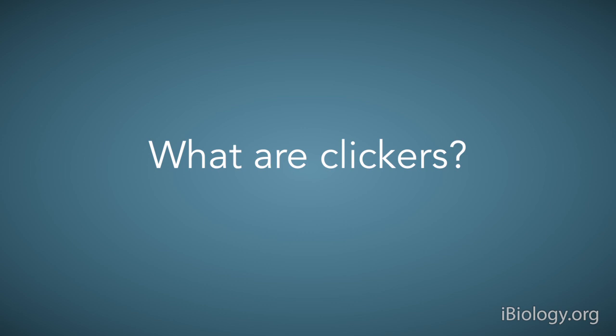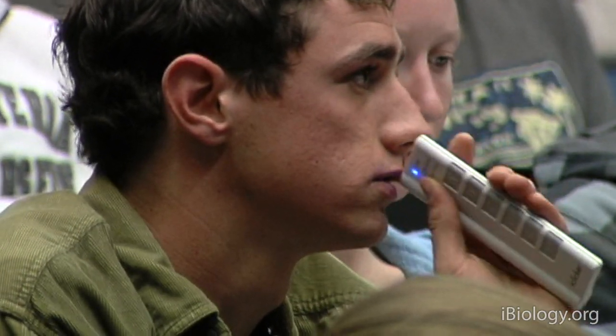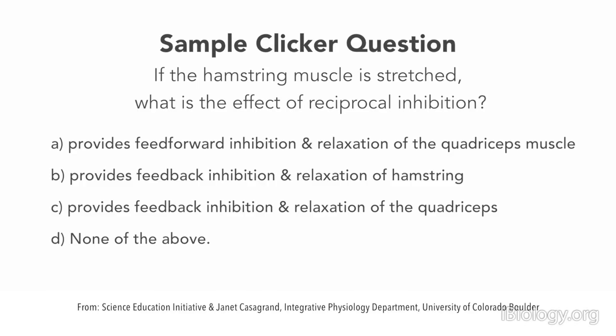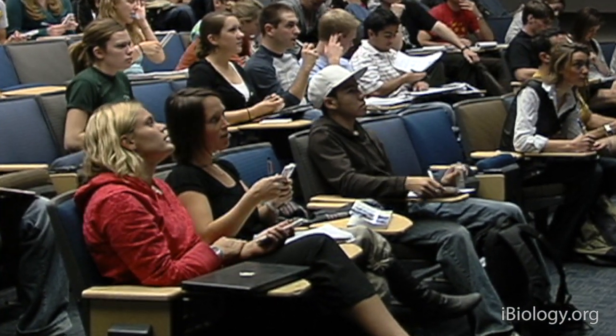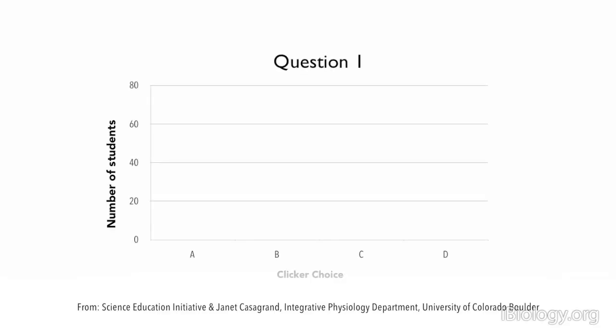So what are clickers? The technical term is an audience response device. It's a little handheld device like a TV remote, and generally they have five buttons on them — A, B, C, and D — so that the instructor can put up a multiple choice question on the screen. Everybody clicks their answer, the data goes right to the instructor's computer, and the instructor can then show a histogram showing how many people answered A, how many answered B, and so on.